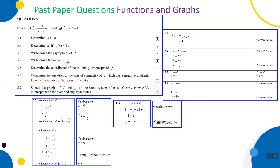5.4, one mark: write down the range of g. If you sketch this, where y = -4 there's a horizontal asymptote. We cannot include that, but the graph lies above it. So the range will be y strictly greater than -4. You can also write it in interval notation. One mark.